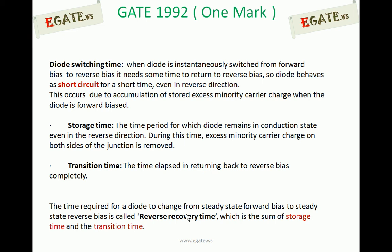Storage time is the time period for which the diode remains in the conduction state, even in the reverse direction — that is, the diode is still on even though it has entered reverse bias. During this time, excess minority carrier charge on both sides of the junction is removed. Transition time is the time elapsed in returning completely to reverse bias. The total time required for a diode to change from steady-state forward bias to steady-state reverse bias is called reverse recovery time, which is the sum of storage time and transition time.